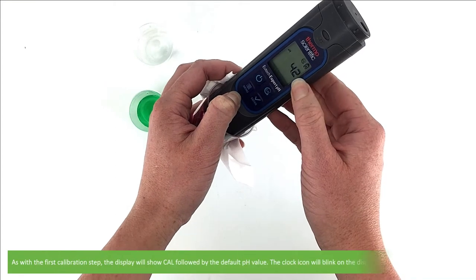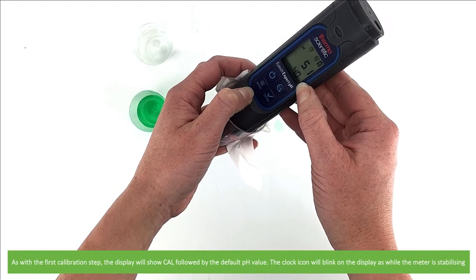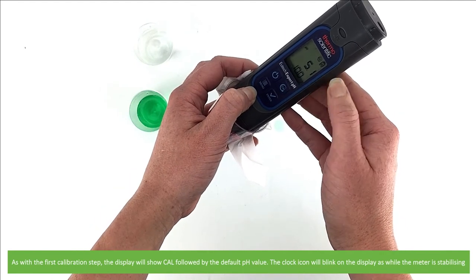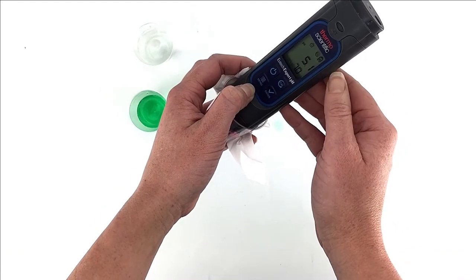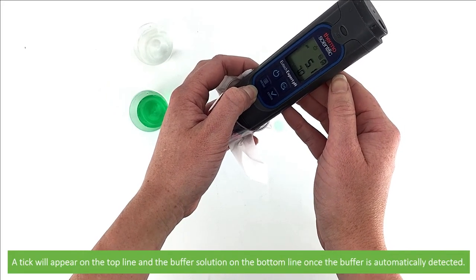As with the first calibration step, the display will show CAL followed by the default pH value. The clock icon will blink on the display while the meter is stabilizing. A tick will appear on the top line and the buffer solution on the bottom line once the buffer is automatically detected.